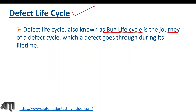When we discussed the defect report template, we talked about the status column. When we raise a defect for the first time, the status is 'New'. When it is assigned to a developer, the status becomes 'Open'. Once they work on it and fix the defect, the status changes to 'Fixed', and they assign it back to the testing team, where the status becomes 'Retest'.